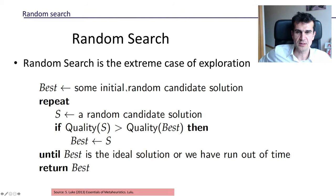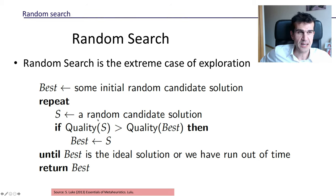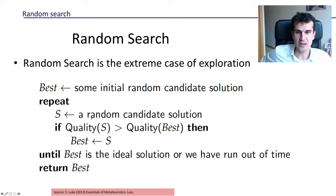We're going to start by selecting an initial random candidate solution. Since we only have one so far, it has to be the best, so we store it in a variable we call 'best'. Then we're going to repeat a number of times the following process: we pick a random candidate solution — in the first iteration it would be a second random candidate solution — we call it 's' for solution, and we compare the quality of the best solution found so far with the quality of this new random candidate solution.